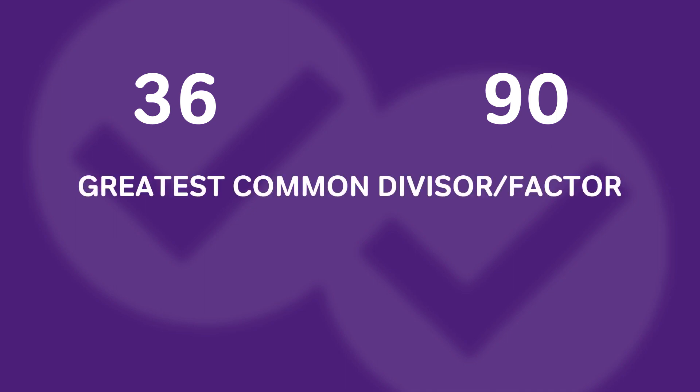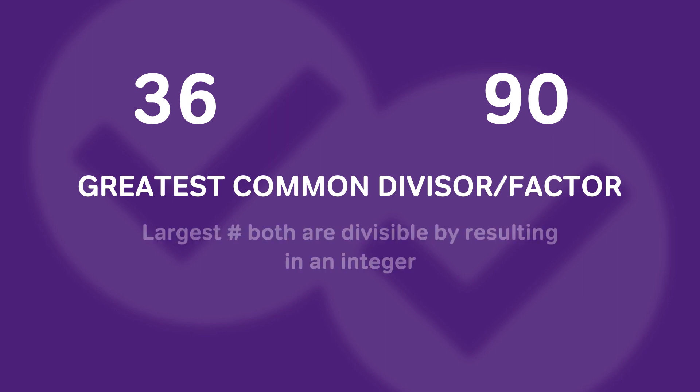Hello, this is Chris of Magoosh. For today's math tip, we're going to look at the difference between greatest common factor and least common multiple. Let's take a look at two numbers: 36 and 90. The greatest common divisor, sometimes known as the greatest common factor, is the largest number that you can divide each of 36 and 90 by so that you end up with an integer, not some fraction or decimal.